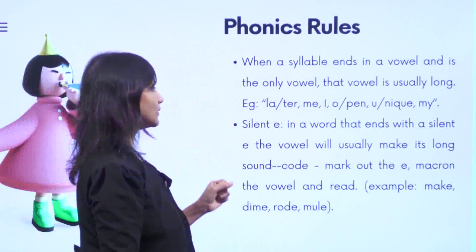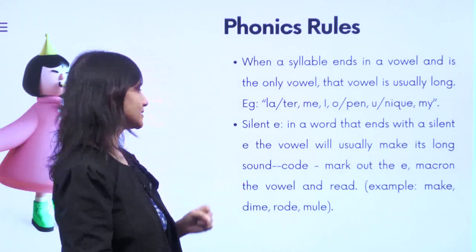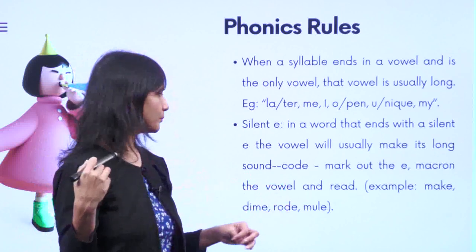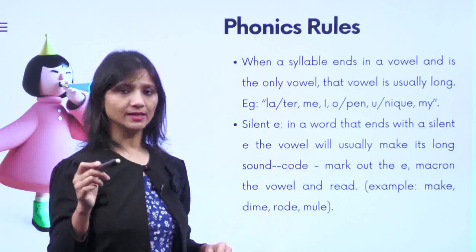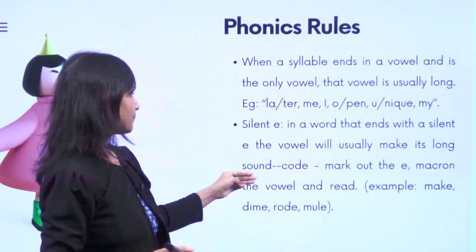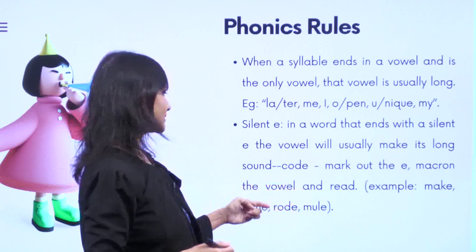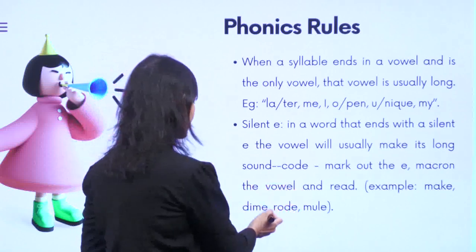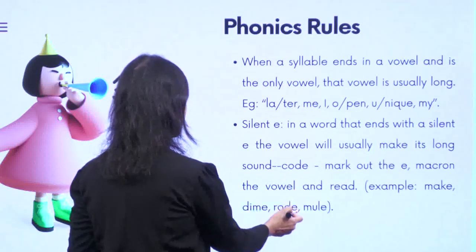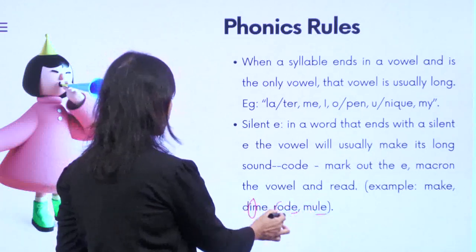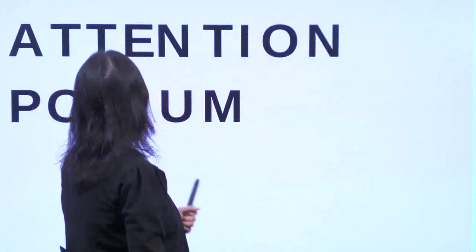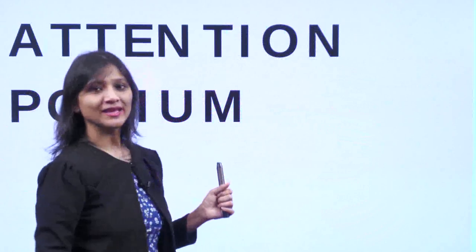Rule eleven — silent E again: when a word ends with a silent E, the vowel will usually make its long sound. Words like 'code', 'road' — the E is silent, so the vowel makes the long sound. Mark out the E (macron the vowel) and read. Examples: make, dime, road, mule — all have E at the end, but the sound produced is the long sound of the vowels A, I, O, and U.